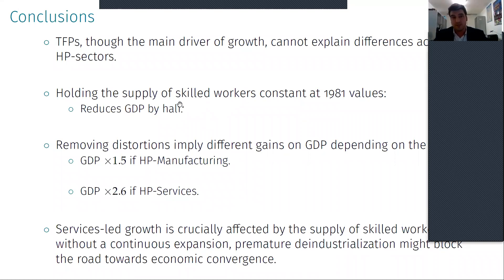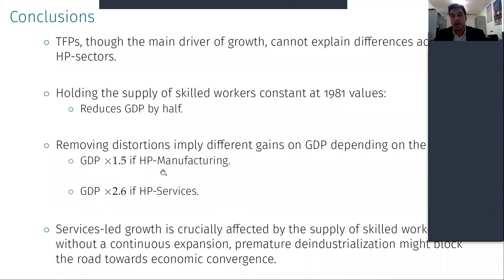It's not only an endowment effect — this is also about how this supply is split over time. Also, removing the distortions has a heterogeneous effect depending on which sector we do so. These are two extreme counterfactual examples in the paper: removing the barriers in the high-productivity manufacturing will increase GDP by a factor of 1.5, while in the high-productivity services it would be by 2.6. This is because it accelerates the process of structural transformation.